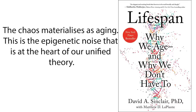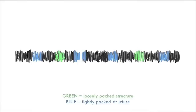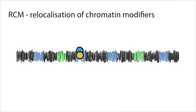Another term they use to describe this phenomenon is RCM — relocalization of chromatin modifiers. The idea is that the protein factors involved in changing epigenetic marks move to sites of damage and are therefore not where they should be, because they're getting distracted. Or if they try to return, they end up returning to the incorrect place.